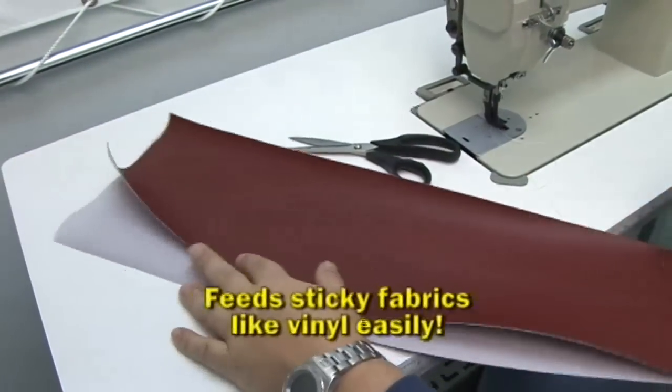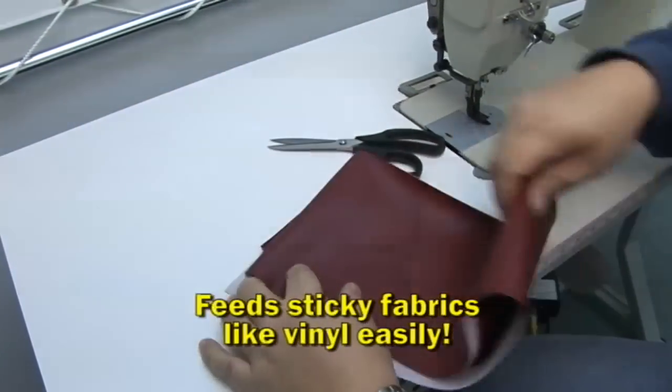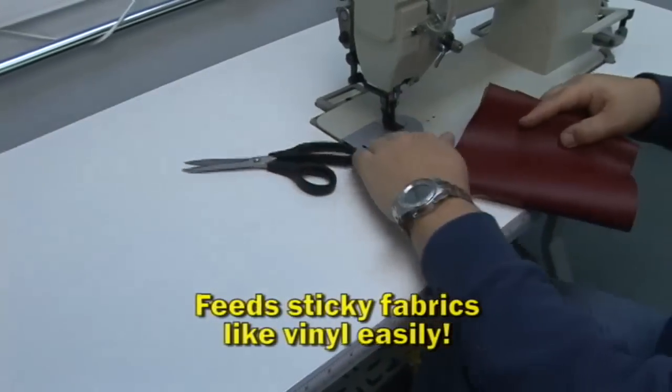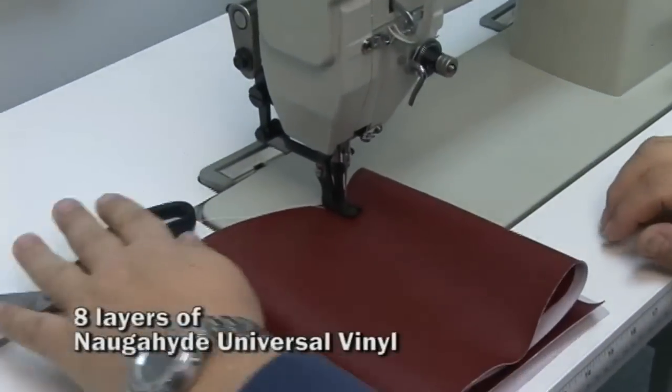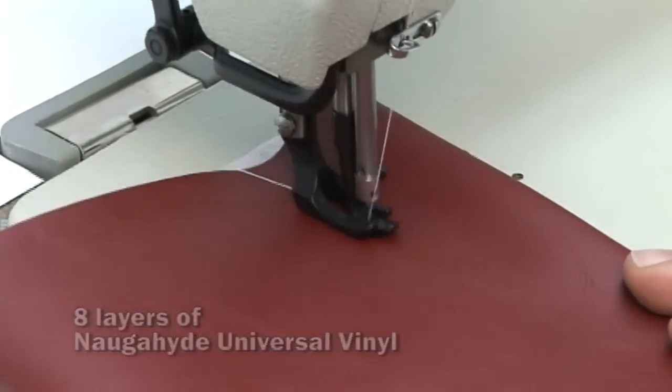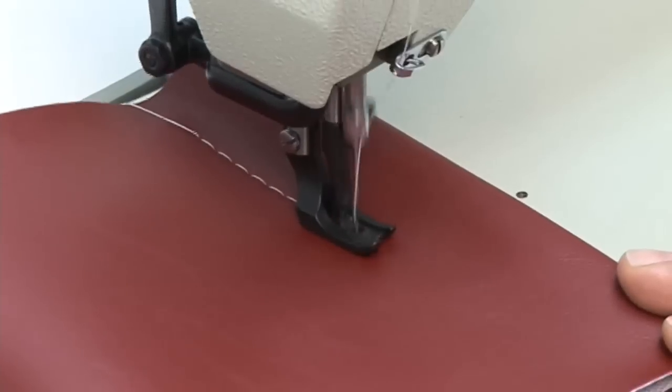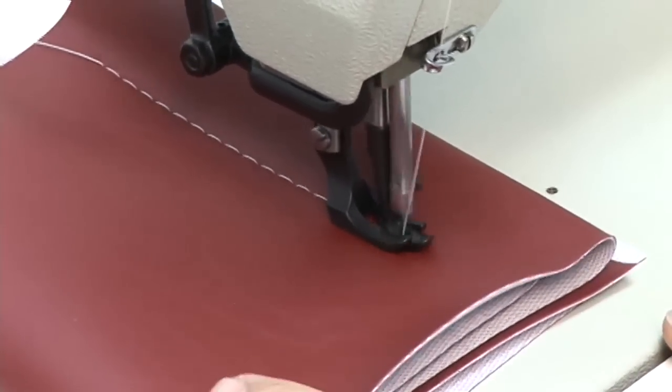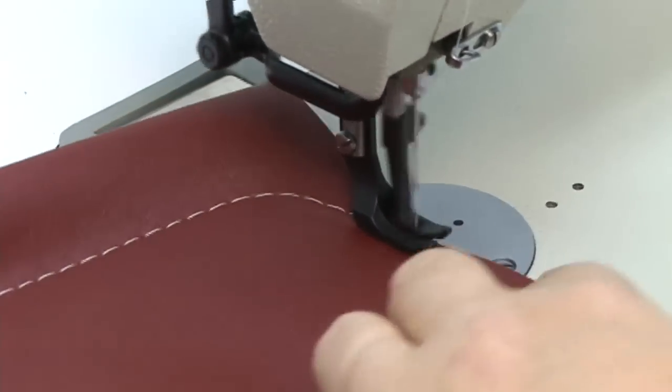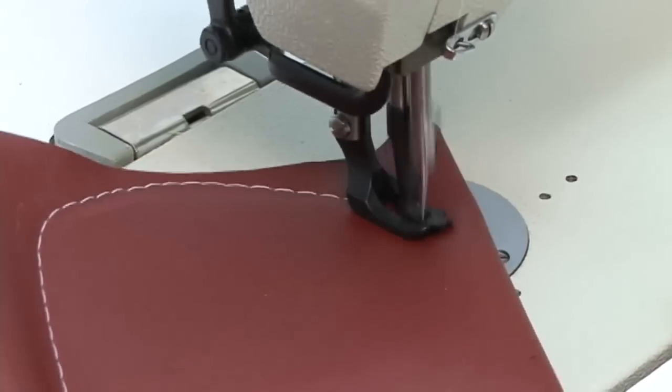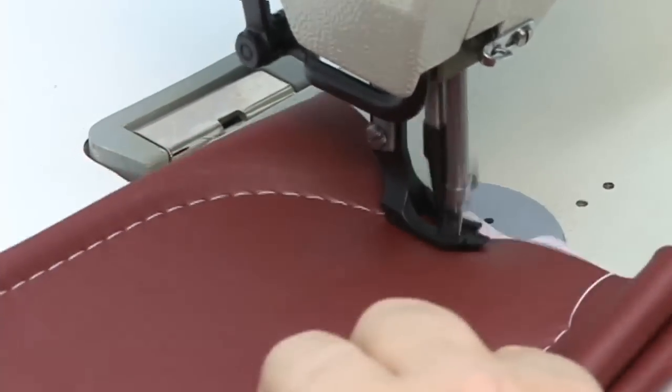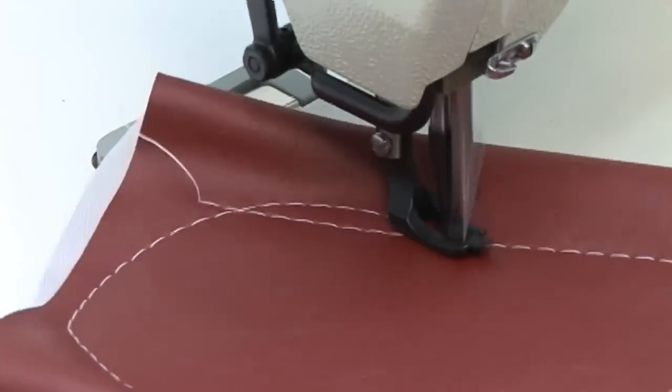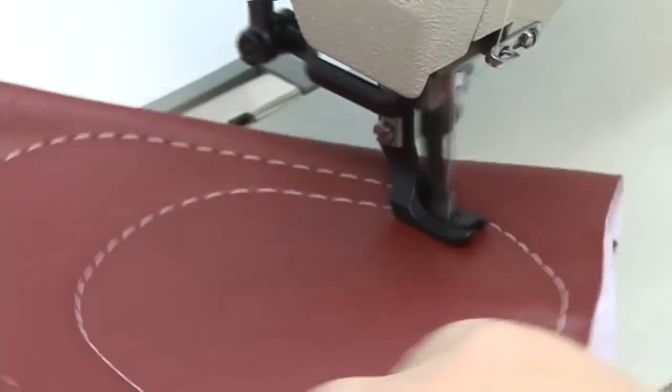Feeding sticky materials like this Naugahyde Universal is no problem. We folded it to 8 layers. And because it's a compound walking foot machine, it grabs the material from both top and bottom and pulls it through effortlessly. Let's ramp up that speed a little bit. Beautiful job.